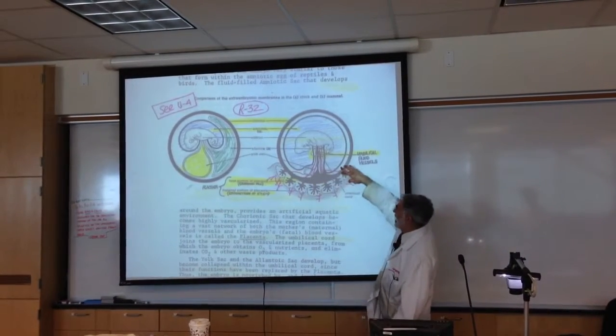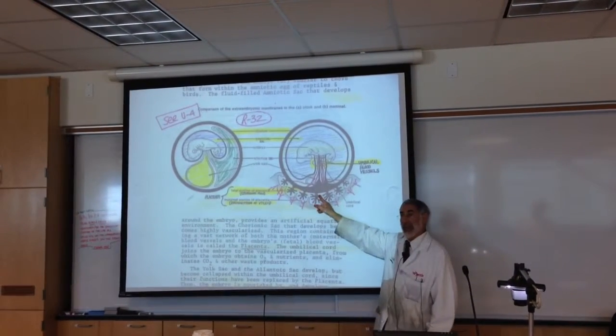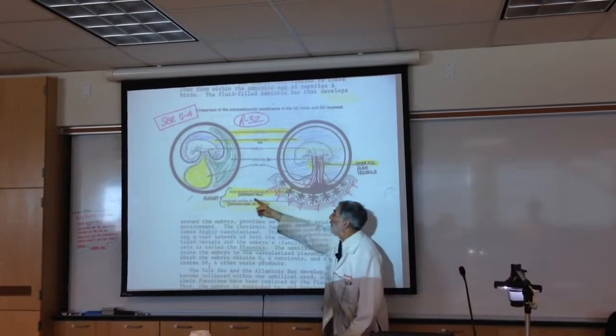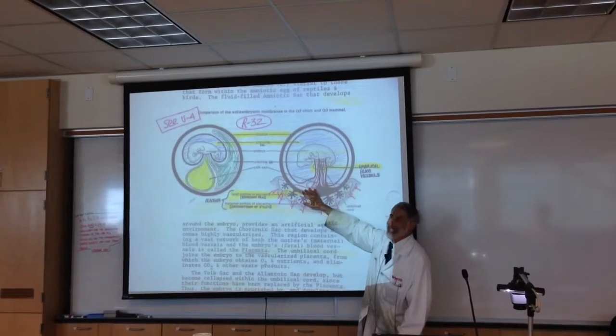The Chorionic villi, and they're called Chorionic because they're part of the Chorionic sac, form the fetal portion, the baby's part of the placenta.